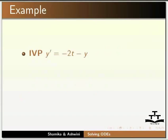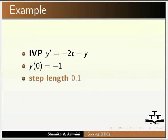Let us solve an example using the Euler method. We are given an initial value problem: Y dash is equal to minus 2T minus Y. The initial value of Y is given as minus 1 and the step length is given as 0.1. We have to find the value of Y at time T equal to 0.5.